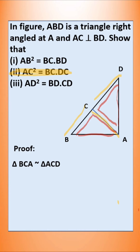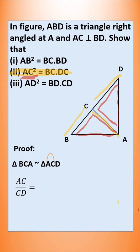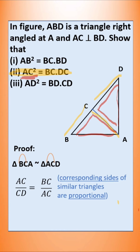Since we need to prove AC squared, we have to find where AC is in the first triangle — it is the last two vertices. So AC by CD, the last two vertices in the second triangle. Now we have to find where AC is in the second triangle — this is the first two vertices. So first two vertices of the first triangle is BC. So BC by AC. Corresponding sides of similar triangles are proportional. Now let us cross multiply: AC squared is equal to BC into DC.